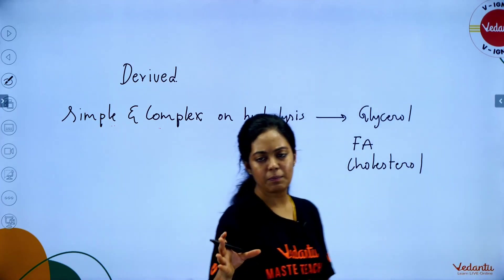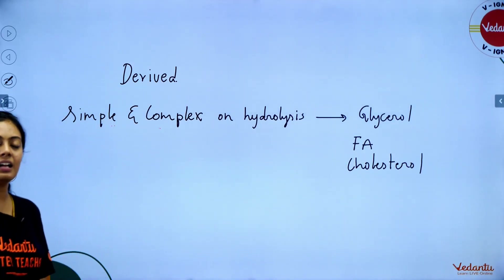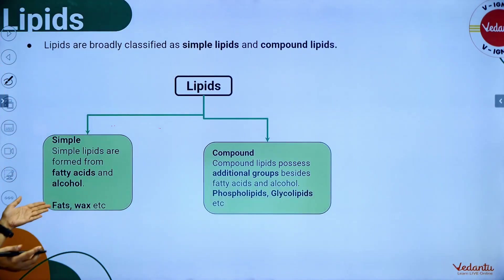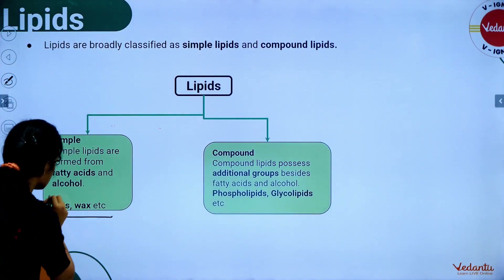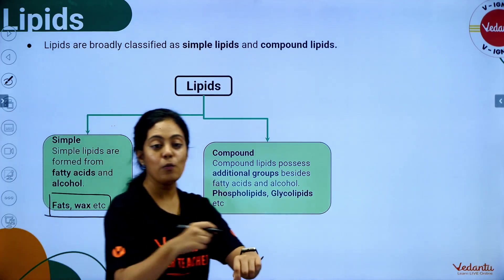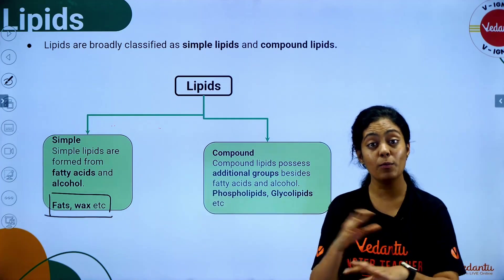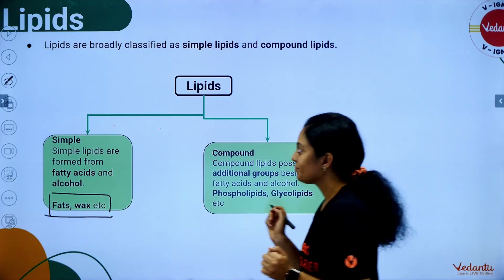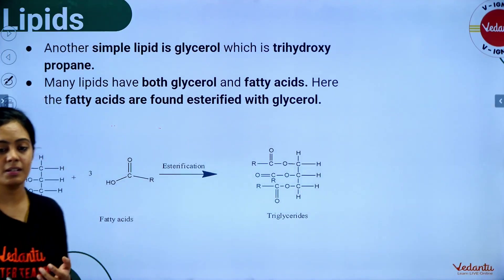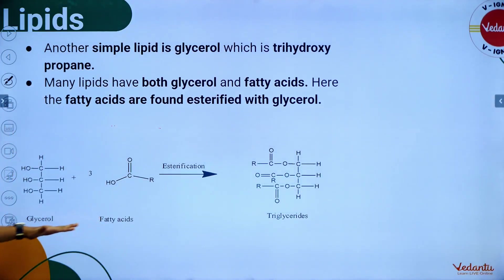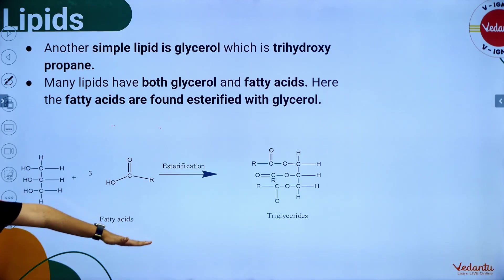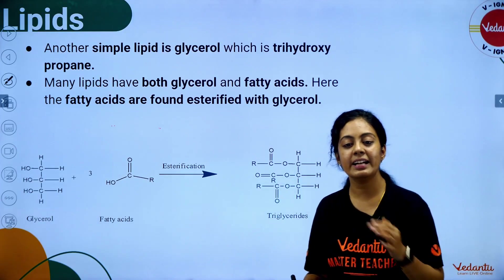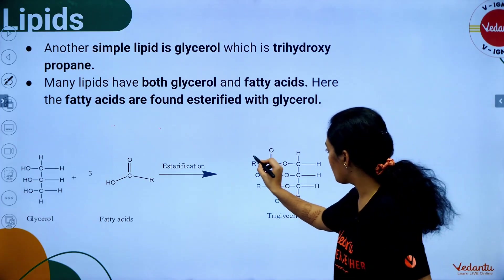Highlights: fats, waxes — even the wax used for hair removal is a kind of simple lipid. Oils are also simple lipids. Glycerol combines with fatty acid to form triglyceride, which contains three R groups.